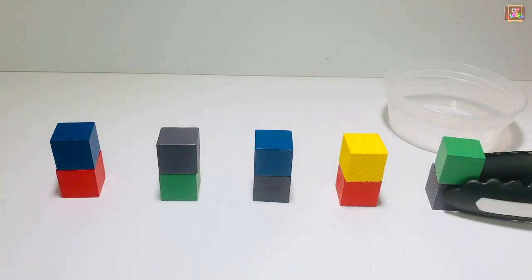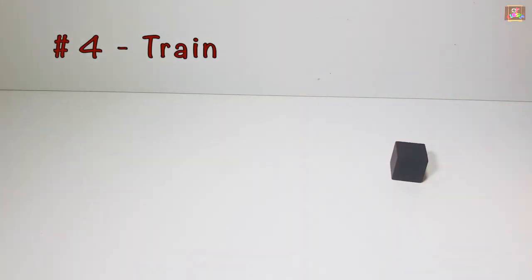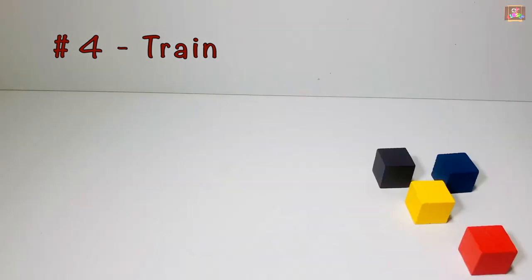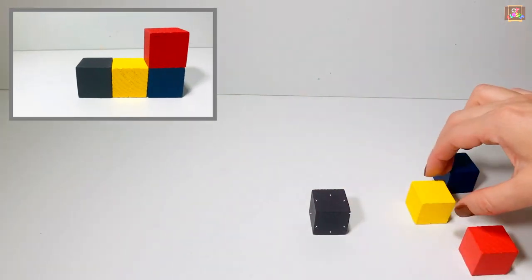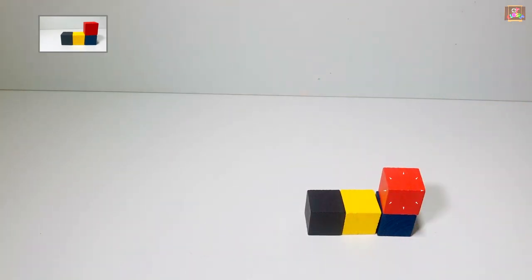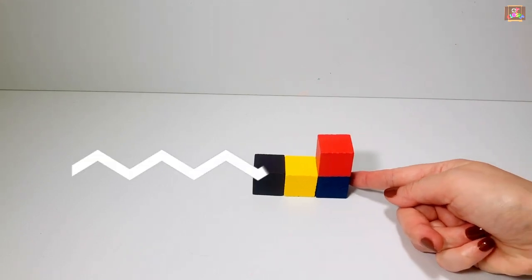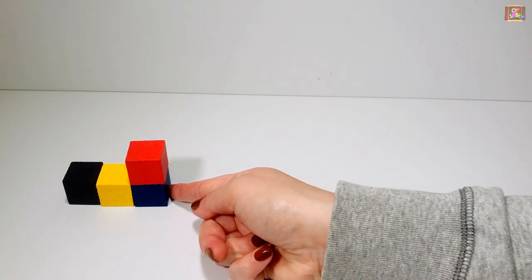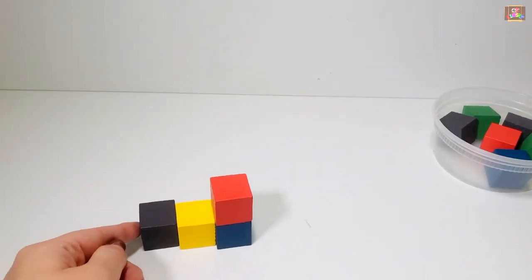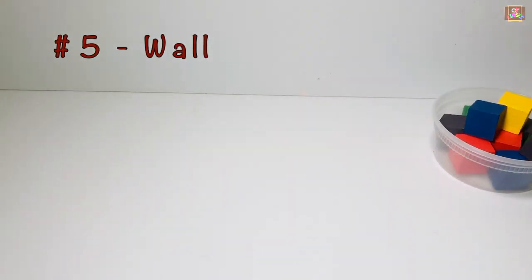Bye-bye houses. Game number four: get four blocks to build a train. Use your pointer finger and push it across the table, now push it back. Goodbye train. Get 10 blocks for...